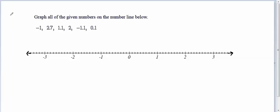So let's begin with the first one. The first number we're asked to graph is negative 1. We can find negative 1 on our number line. It will be one unit below zero. We'll put a circle at negative 1.